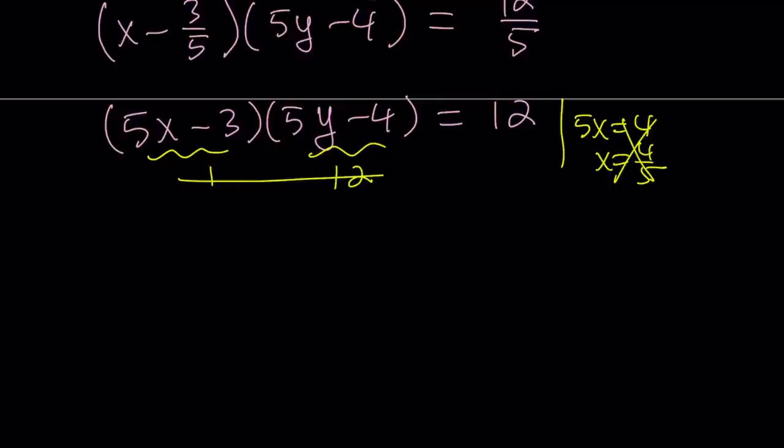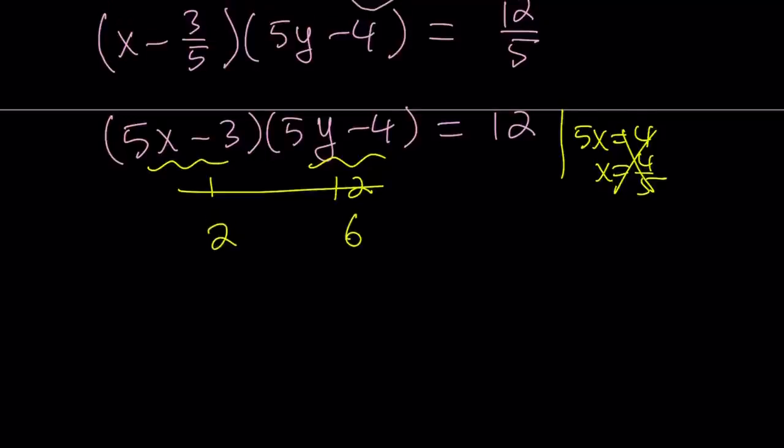And the second pair I'm going to try is going to be 2 and 6. This gives me 5x equals 5 and 5y equals 10. This is nice because this gives me x equals 1 and y equals 2. Awesome. This means 1, 2 is a solution. Beautiful.